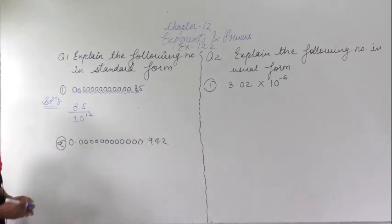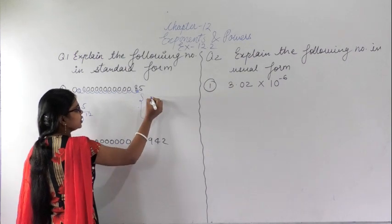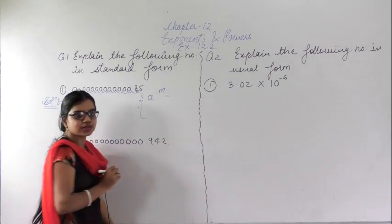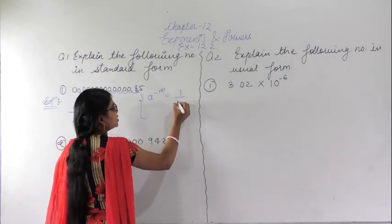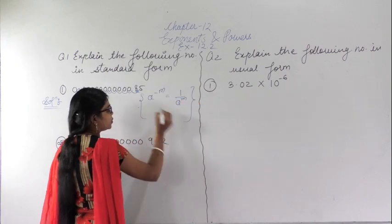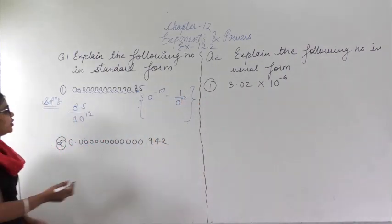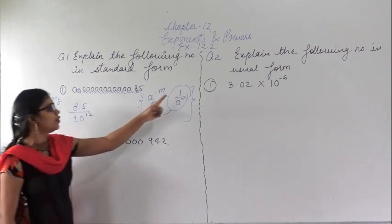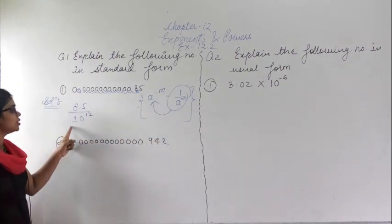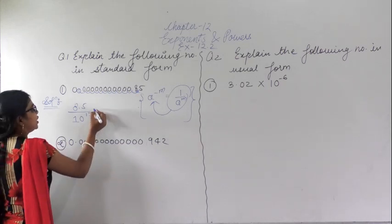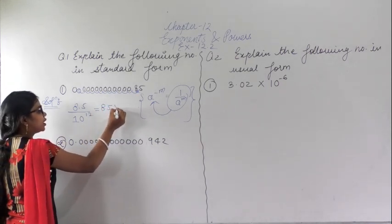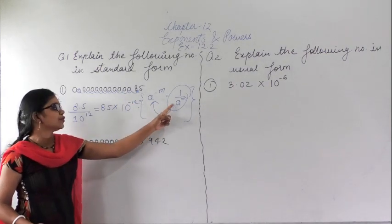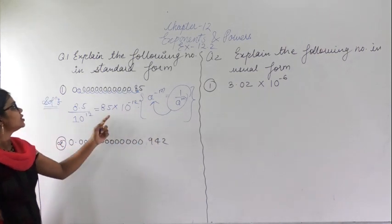Now, if we are given a negative exponent, we can convert it using the law: 1 upon a to the power m equals a to the power minus m. So this expression is in the form of 1 upon a to the power m, and I can write it as 8.5 into 10 to the power minus 12. This is the standard form.